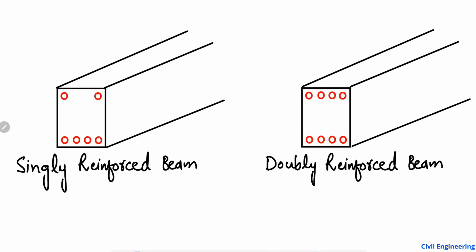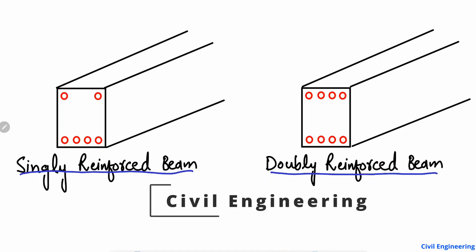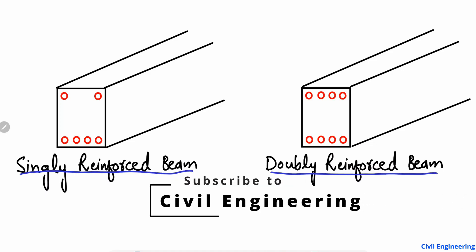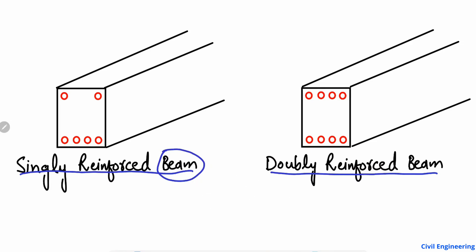Hello guys, welcome back to the civil engineering YouTube channel. Please subscribe to our channel for daily civil engineering videos. Today we are going to explain the difference between the singly reinforced beam and the doubly reinforced beam — what is the main difference between these two types of beam in civil engineering structures. We know that a beam is a horizontal member used to resist bending or fracture stresses.